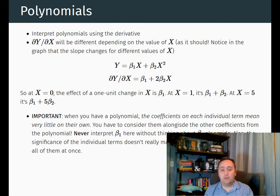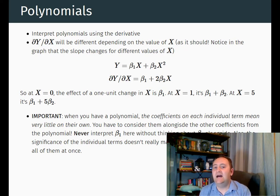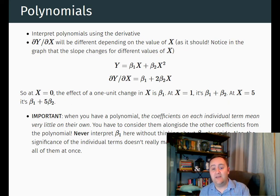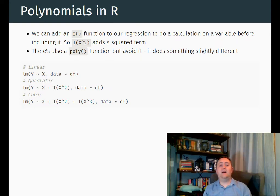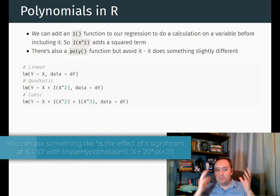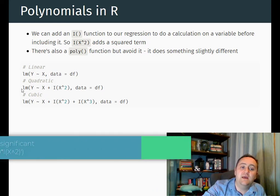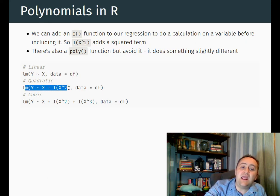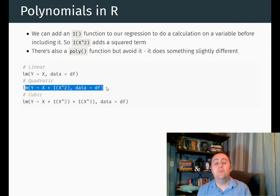So to summarize polynomial terms: if we have a curvy relationship, we can fit a curvy line using polynomial terms. We can add squared terms to get parabolic lines, cubic terms to get cubic lines. We don't want to go too high because things can get statistically unsettled. Once we have it, we interpret the effect of x by writing out the regression equation and taking the derivative of y with respect to x. The slope will be different depending on the value of x. In R, we do this by wrapping the term in the I() function — so instead of y on x, we write y on x plus I(x squared) — and that adds the x squared term to the regression.